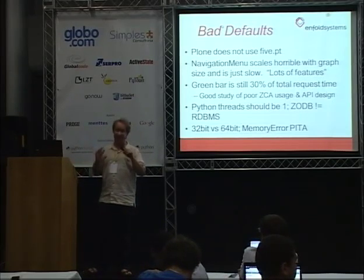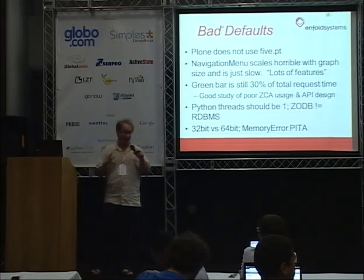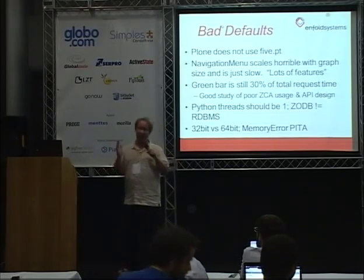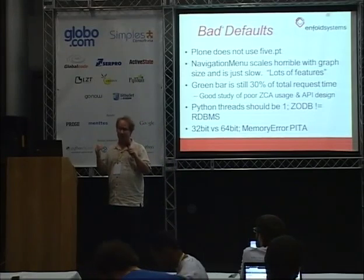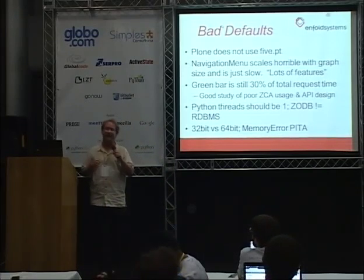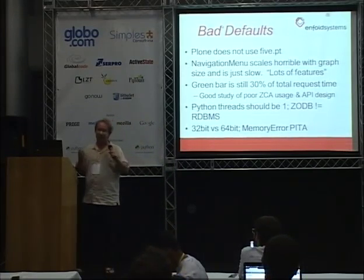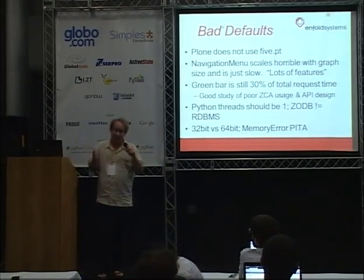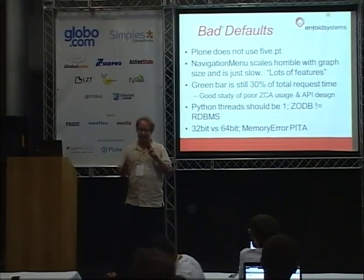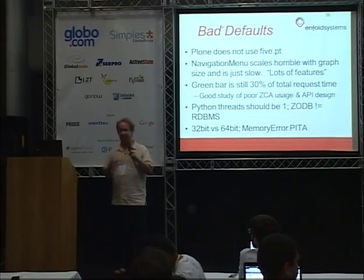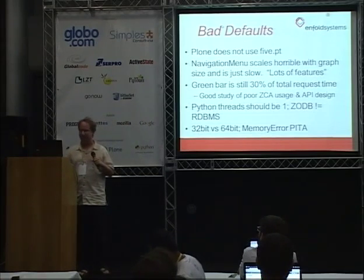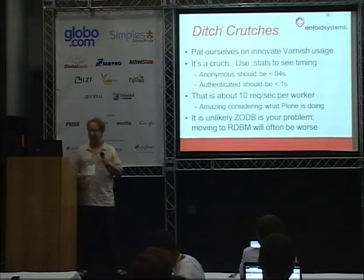32-bit versus 64-bit: on 64-bit you have a heavier footprint, but you won't run into memory errors. Memory errors are not problems you want to have in production. Either you design your working set so it won't increase past anywhere near 1.5 gigabytes, or you just use 64-bit and pay the RAM price.